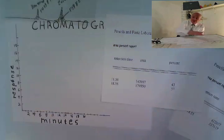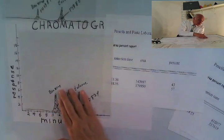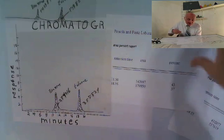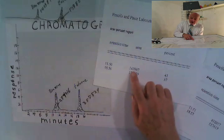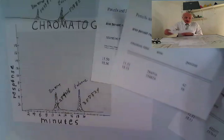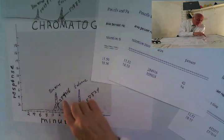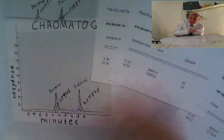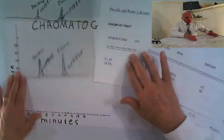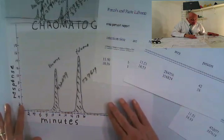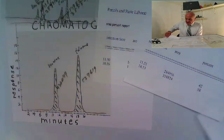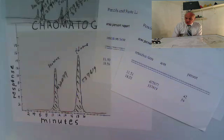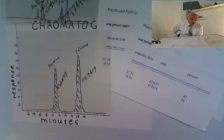We run another standard at 100 parts per million benzene and toluene. It gives us an area of 284,000 at the same retention time for benzene, and 358,000 for toluene. Running a third time at 200 ppm, the peaks are getting bigger but staying in the same place — 11.51 minutes — giving an area of 432,000 for benzene and 537,000 for toluene.